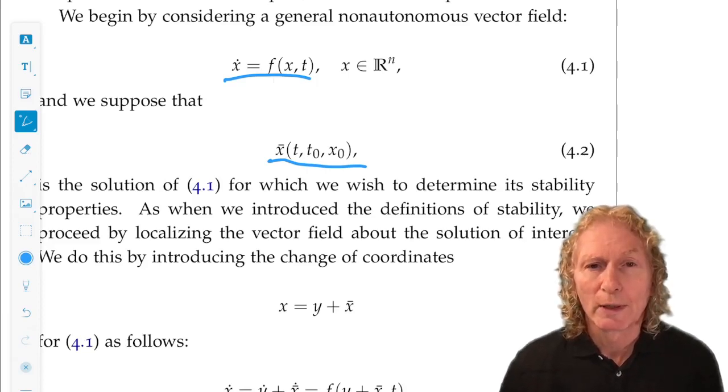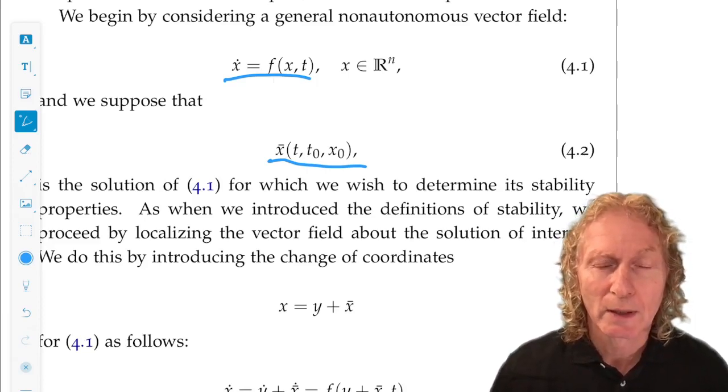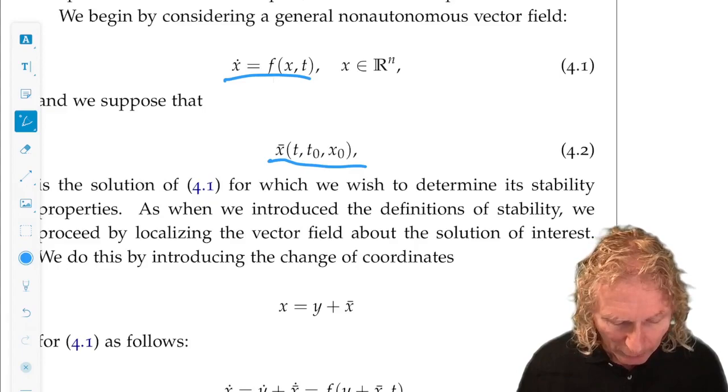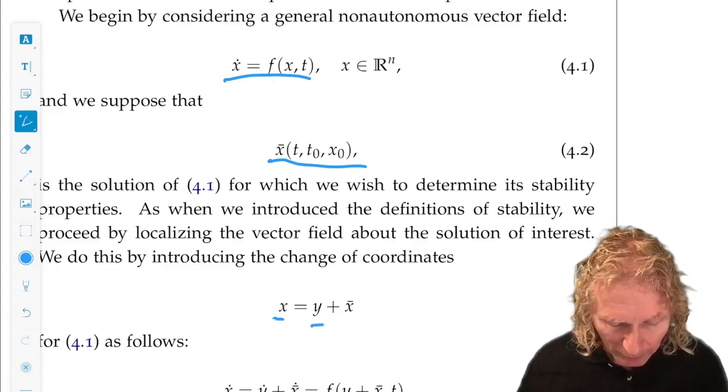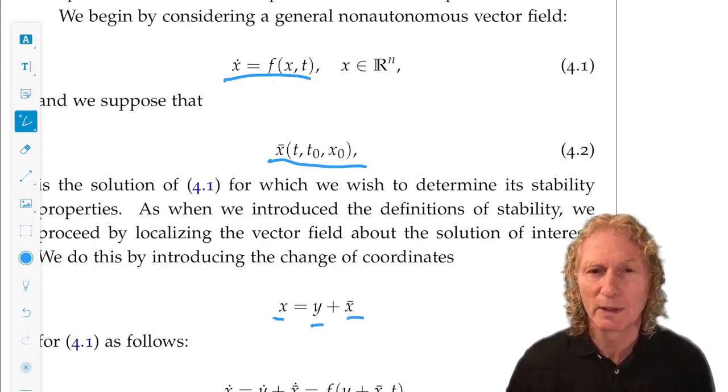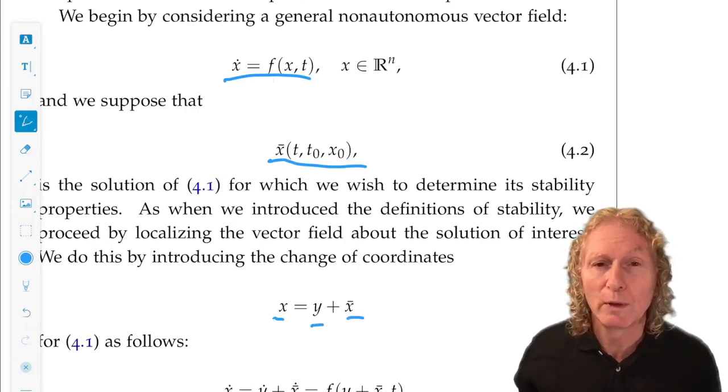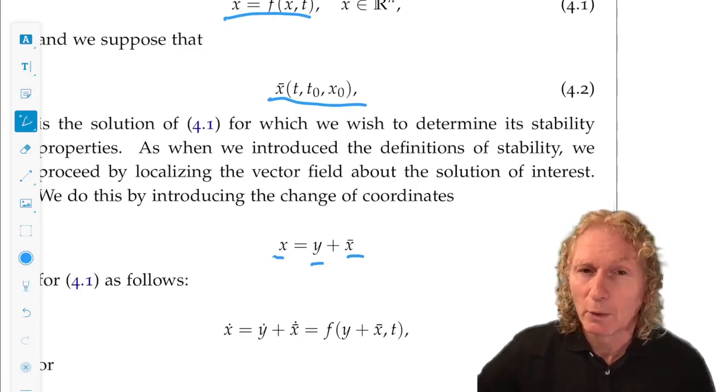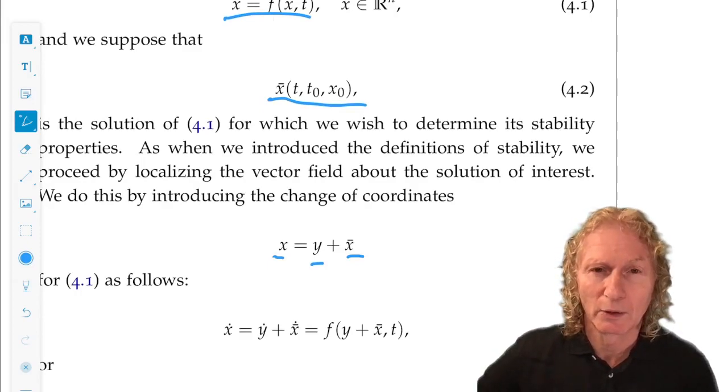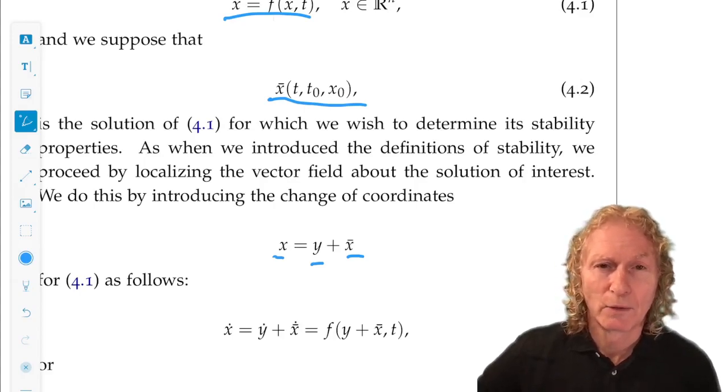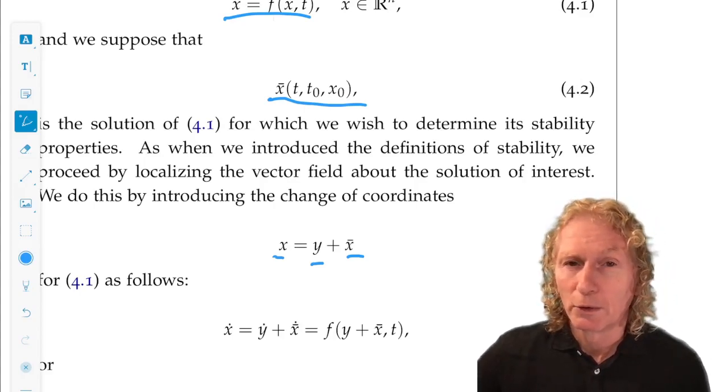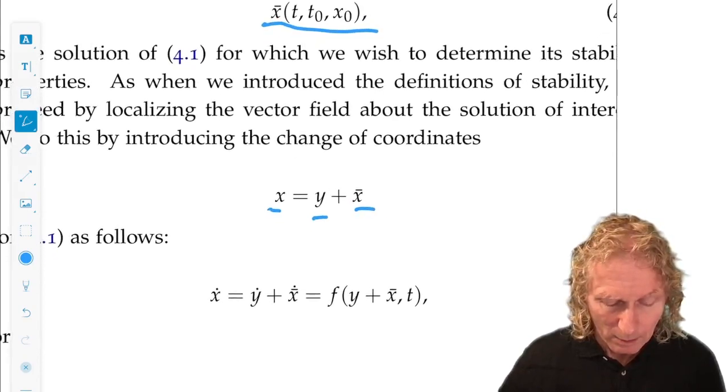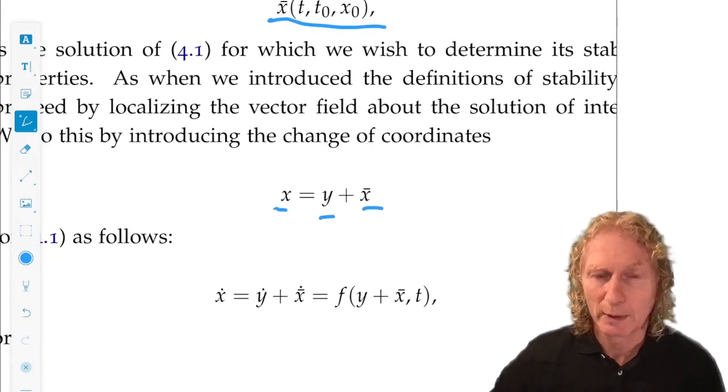So we're going to define a coordinate system that localizes X̄ in the sense that our original coordinates, X, are going to be Y plus X̄. This is exactly the same thing we did in the last chapter. You can think of it as a moving coordinate system because X̄ varies in time. So Y equals zero corresponds to X equal X̄. So it's Y small that defines a coordinate that's close to X̄.